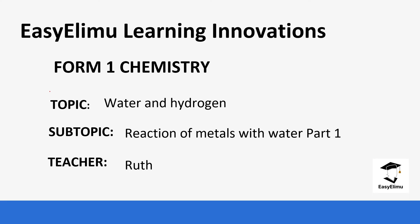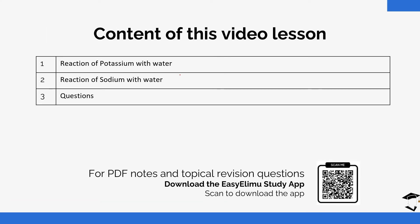Welcome to Easy Elem Learning Simplified. Today we are going to study from one work, looking at the topic water and hydrogen. This is a continuation of the previous lesson, so you can go back and watch the lesson we discussed on the burning of candle. Today we are going to look at the reaction of metals in two parts, specifically potassium and sodium reacting with water. Later on we are going to look at a few questions in regards to what we discuss today.